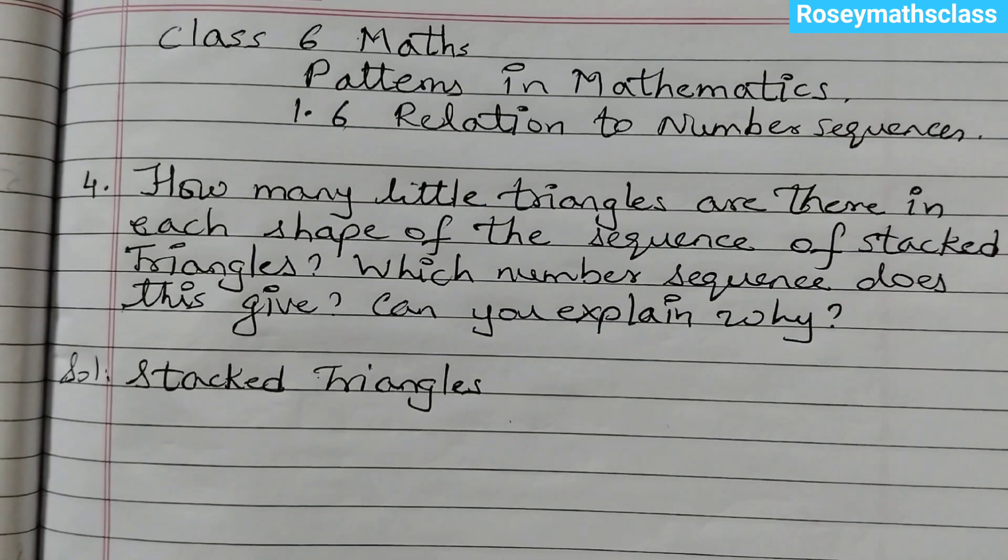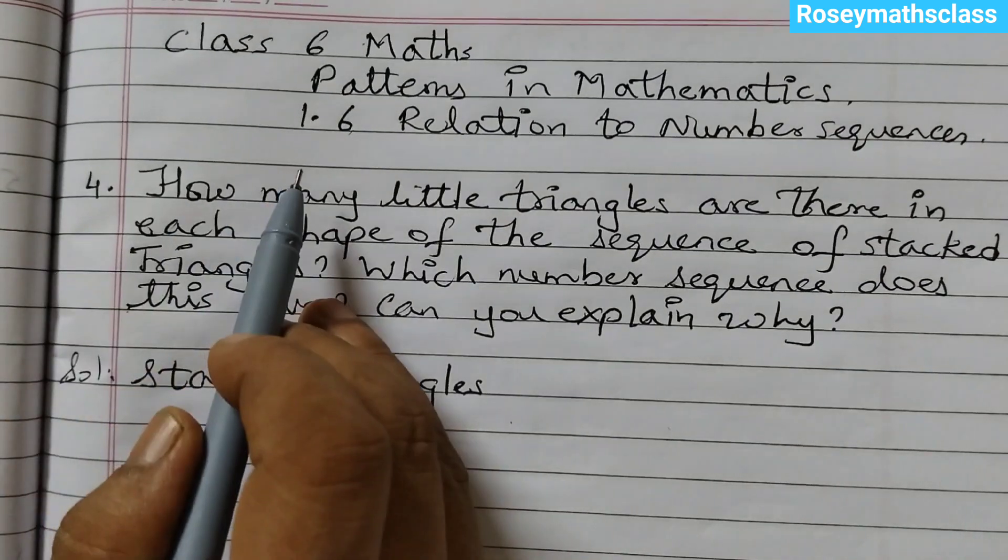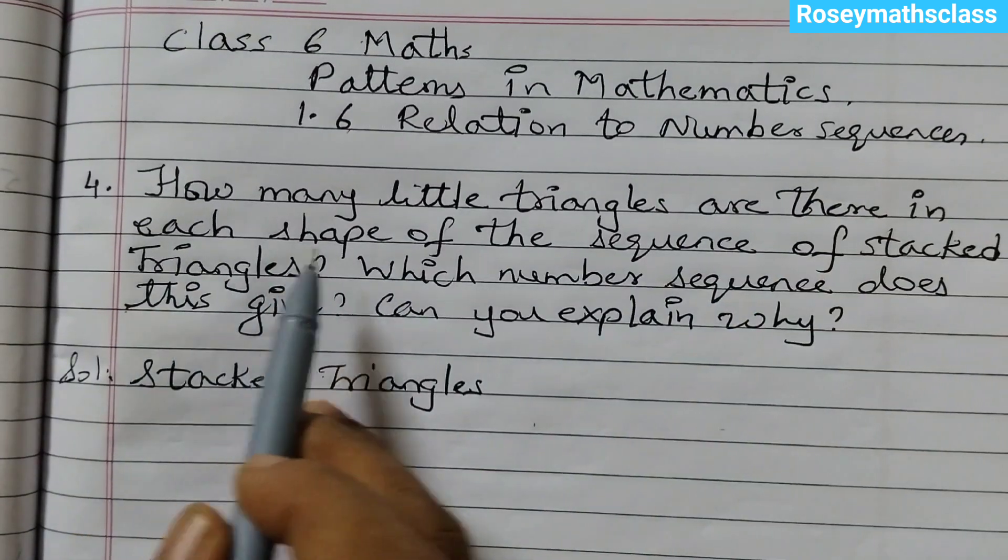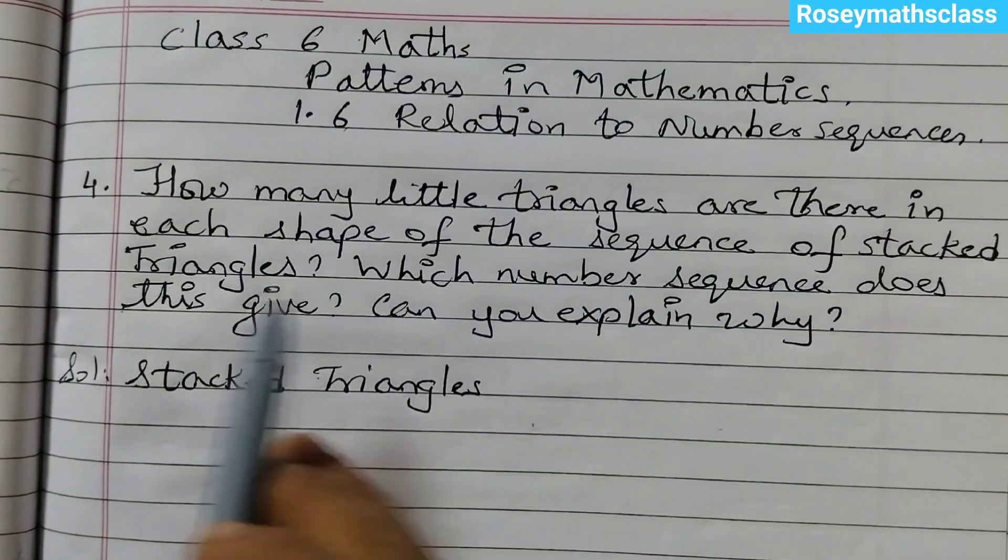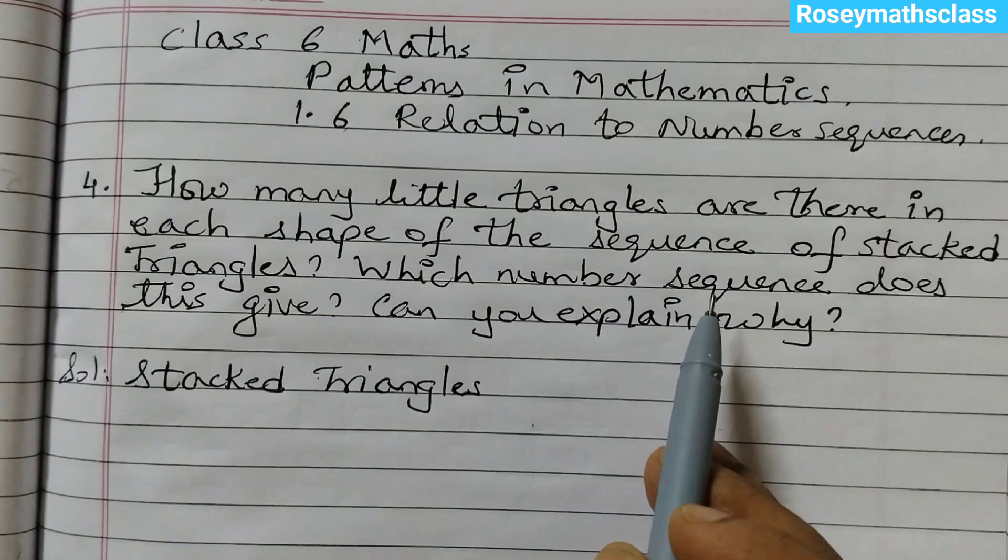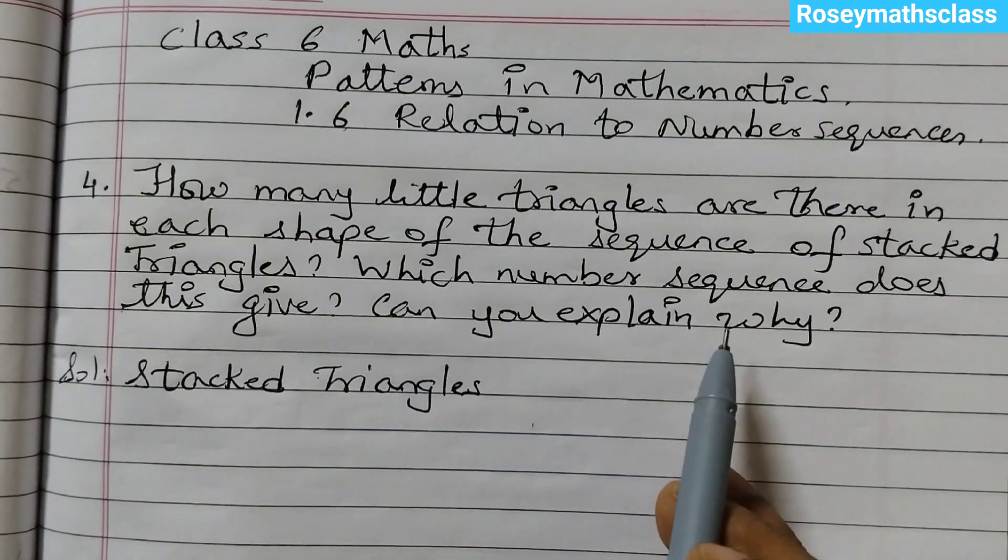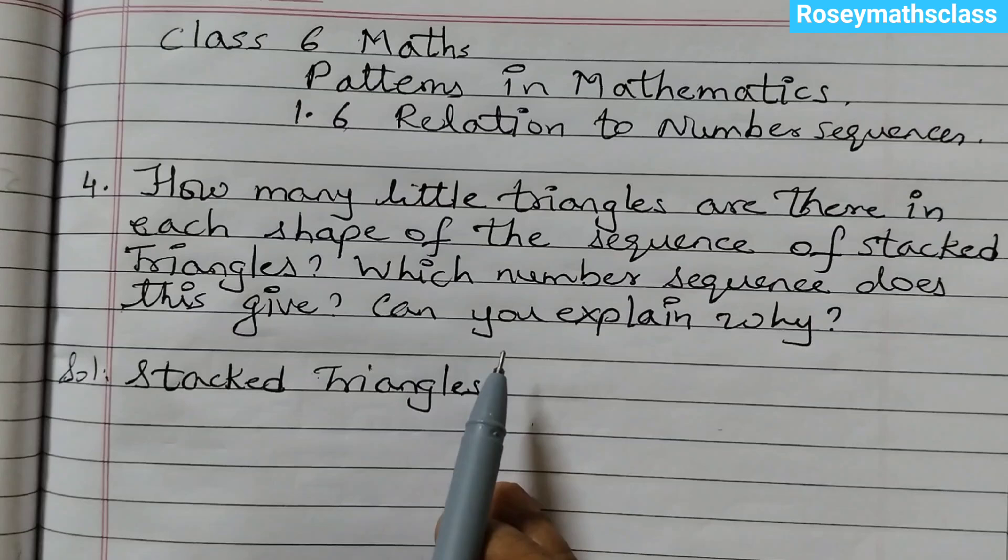Hello students, today we shall discuss question number 4 of 1.6 relation to number sequences. Figure it out: How many little triangles are there in each shape of the sequence of stacked triangles? Which number sequence does this give? Can you explain why?